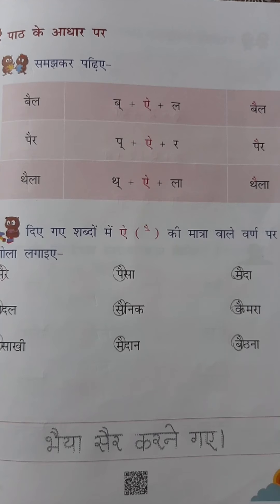You can see 'samachkar padhiyye' on page number 51. B plus I plus La, that is Bail. Like that, Pair and Daila are given there.